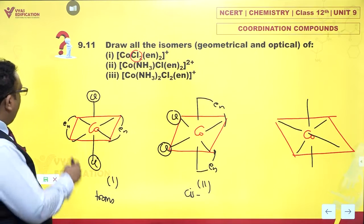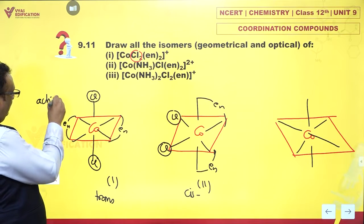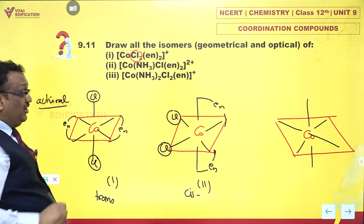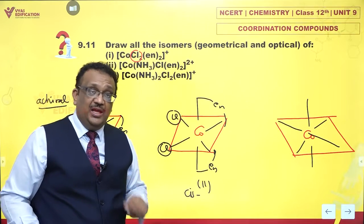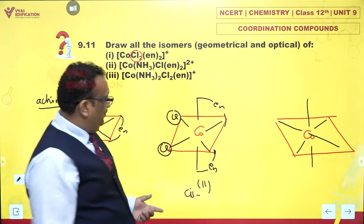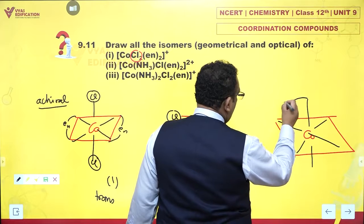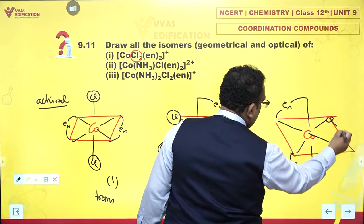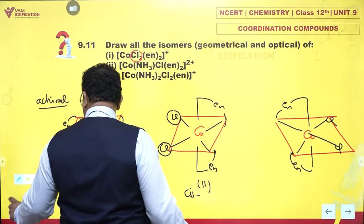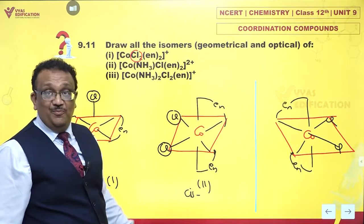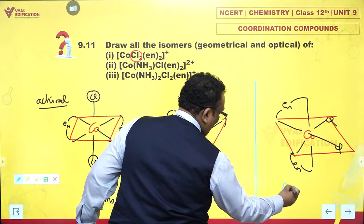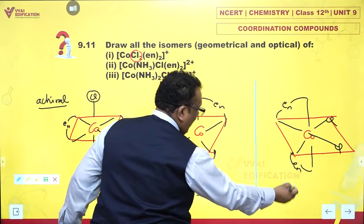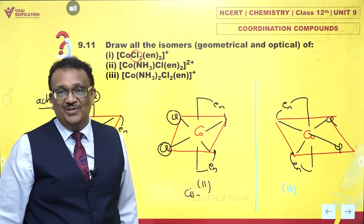One is achiral, it is not optically active. But two is optically active. So you find you have two and three. Two and three are actually non-superimposable mirror images. What are they? They are actually enantiomers, they're optical isomers.